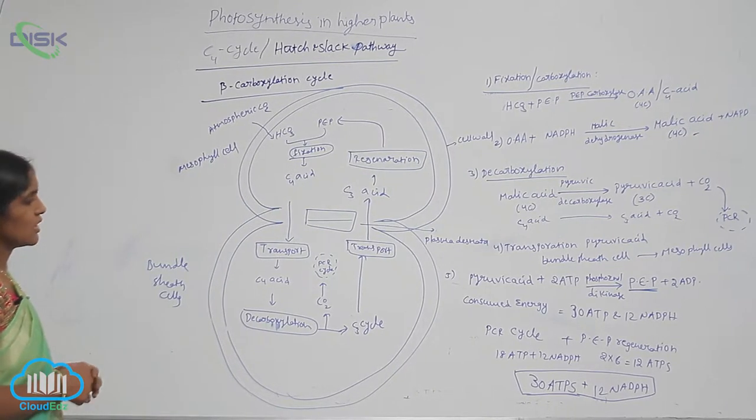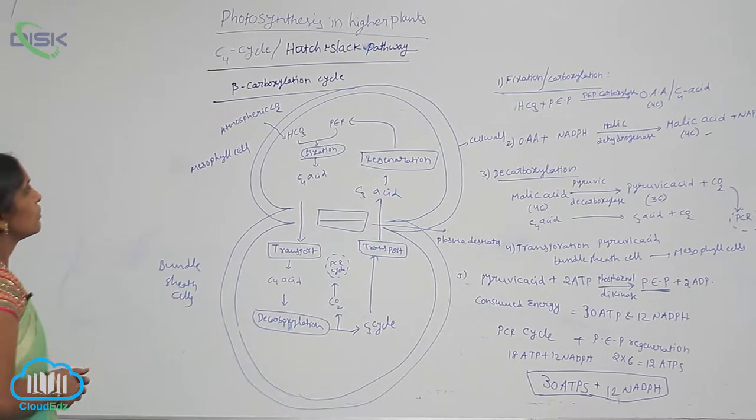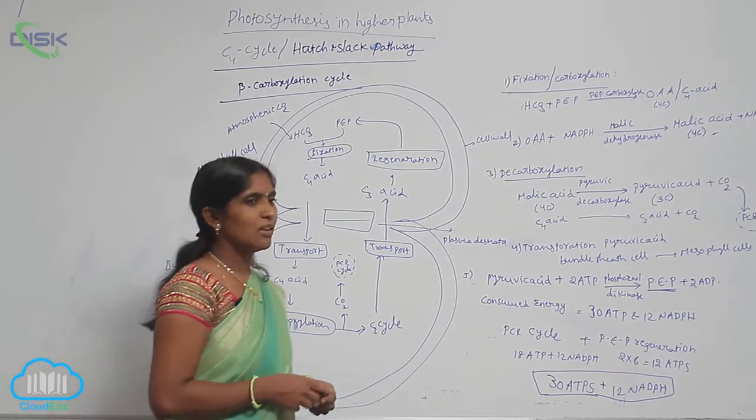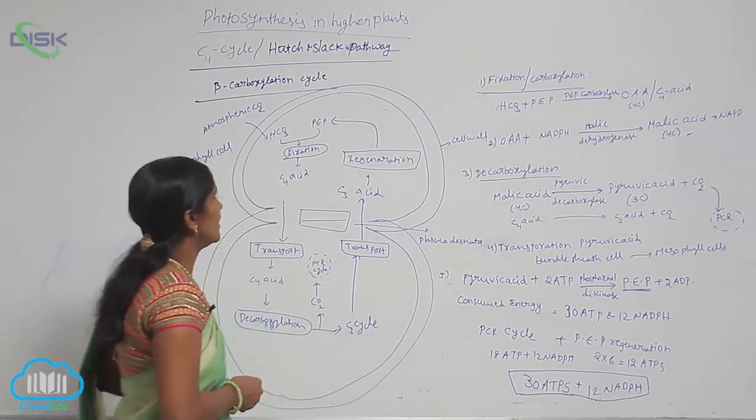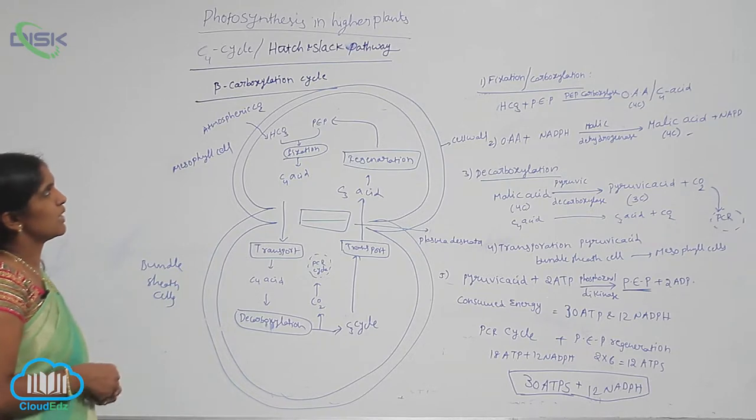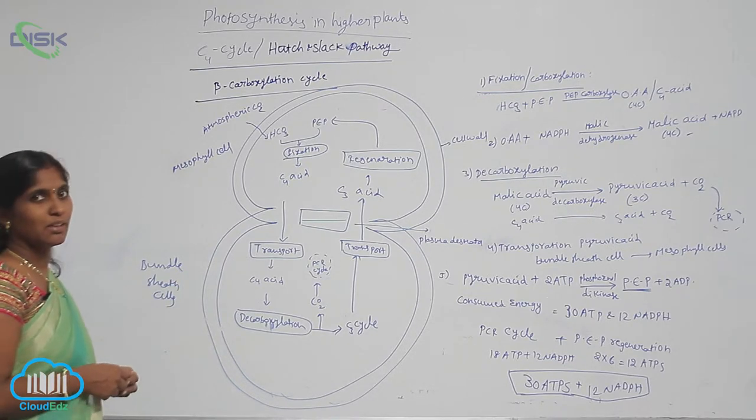Summary of beta-carboxylation cycle, also called the C4 cycle. These are the steps of the C4 cycle proposed by Hutchins-Lagg in the sugarcane plant.